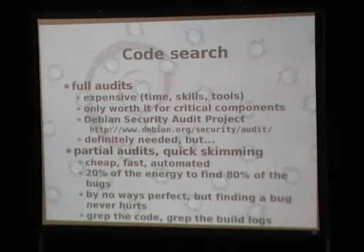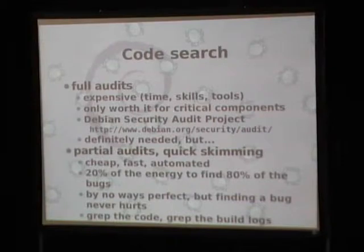You have several ways to find bugs in the sources. First, you can do full audits of the source code, which is quite expensive - it requires time, skills, and sometimes very expensive tools. So it's really only worth it if you have a lot of time and if you're auditing very critical components of your system. There is a Debian security audit project, but you have ways to help as well, finding bugs in faster ways - cheaper, faster, and more automated checks for bugs. We still need these security audits, which go far beyond what can be done with automatic tools, but grabbing the code is really cheap and you can find many things like that.